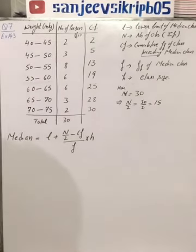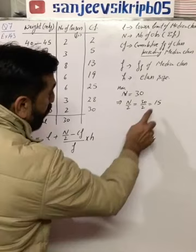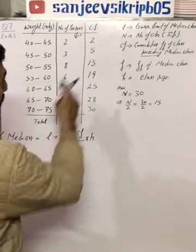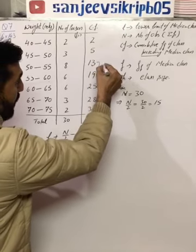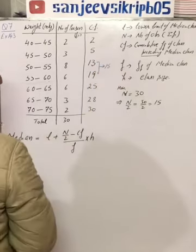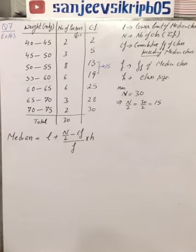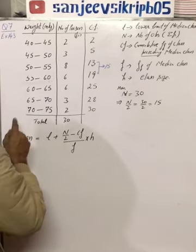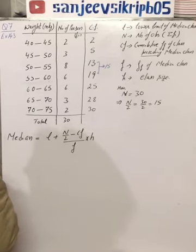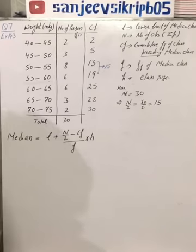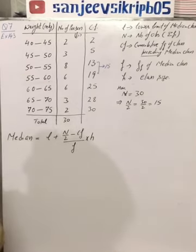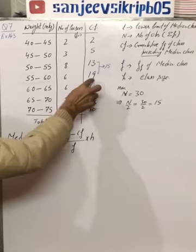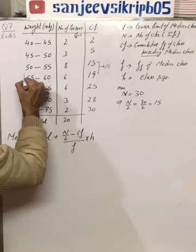When you get N by 2, see where this N by 2 lies in the cumulative frequency. As it is clear, it lies between 13 and 19. So our median class will be 55 to 60, because it lies between 13 and 19.